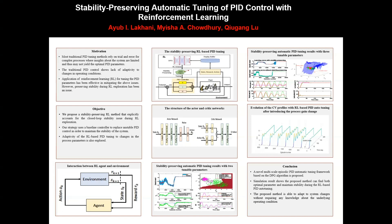Decaying Gaussian noise is added to the output to encourage exploration at the beginning of the reinforcement learning process. The critic network consumes state and action and returns the Q-value for update with the policy gradient.